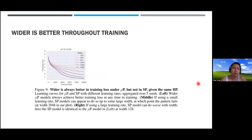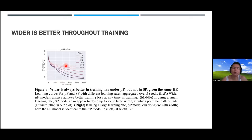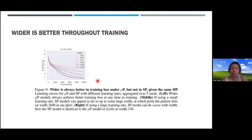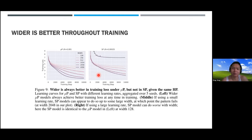Coming back to width: there's another interesting property that wider networks are better throughout training immediately. Looking at training curves plotted against training step, the different curves don't intersect and darker curves—representing wider models—always lie beneath lighter curves, indicating lower loss. This sounds like something we should take for granted, but with standard parameterization it's typically not the case.